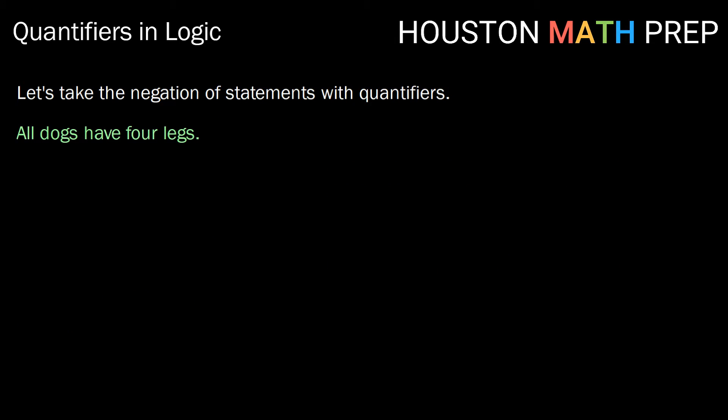Let's take a look at the negations of statements with quantifiers. So if we use our example, all dogs have four legs. The negation of that is that there is at least one dog that does not have four legs. So the opposite of all of something being true is at least one does not fit that pattern.